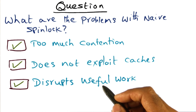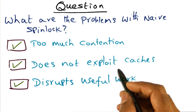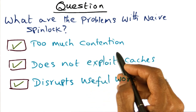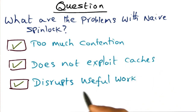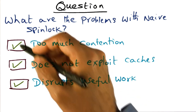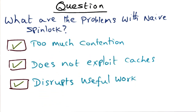So this is really the problem: the test-and-set instruction, because it bypasses the cache, causes a lot of contention on the network and also impedes useful processors from carrying on with their work, which would otherwise advance the parallel program. All of these are valid problems with this naive spin lock.